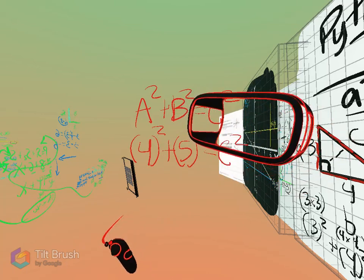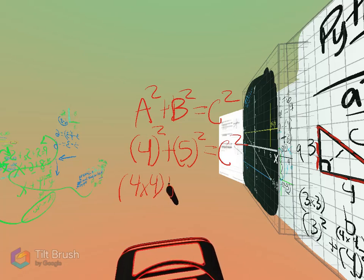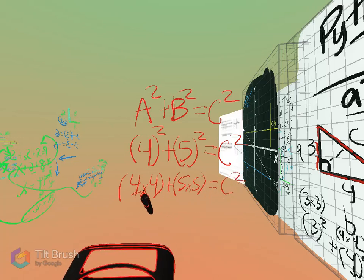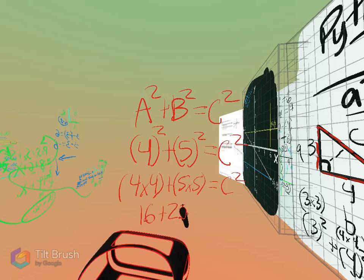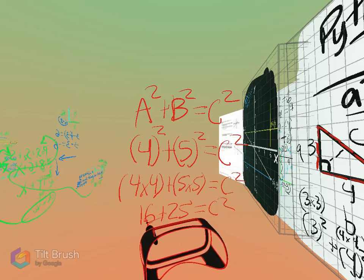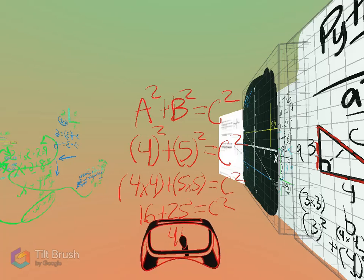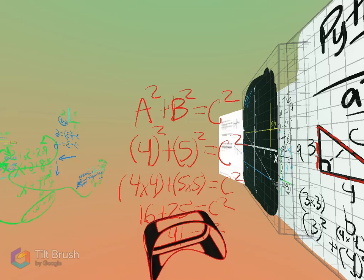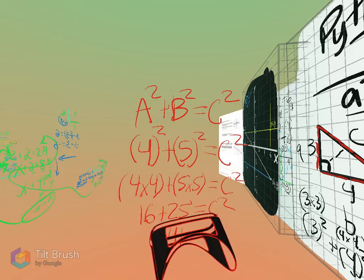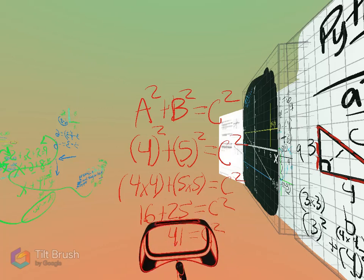And what does squaring something mean? It means multiplying the number times itself. So four times four plus five times five. Equals C squared. Four times four is 16. Plus 25. Five times five is 25. Which we actually saw in the last problem, by the way. Equals C squared. 16 plus 25 is 30, 41. Which will equal C squared. Did I do that wrong? Nope, that looks right. Cool, that seems right.